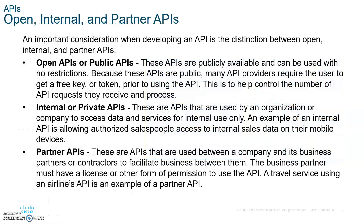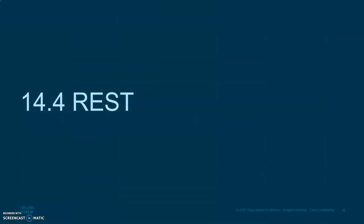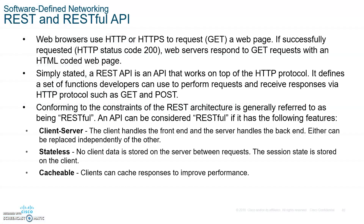APIs are either public/open — for example, Google allows their APIs to be open so you get all these different apps in the app store — internal/private, or partner APIs used only between companies. Please write those down. Here are the different types of web services APIs: SOAP, REST, XML-RPC, and JSON-RPC. Please take a snapshot of this as well for the web services APIs.